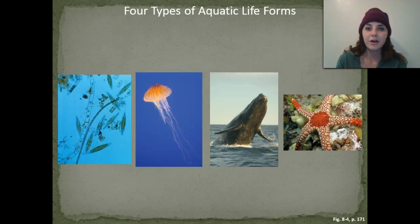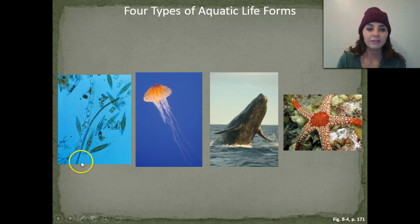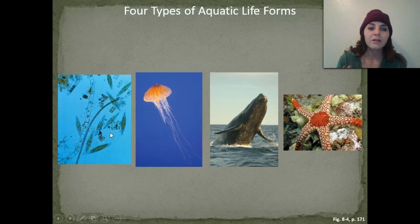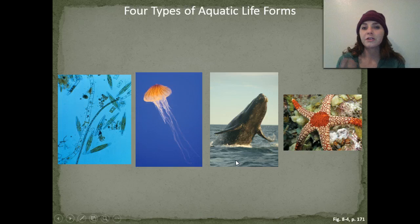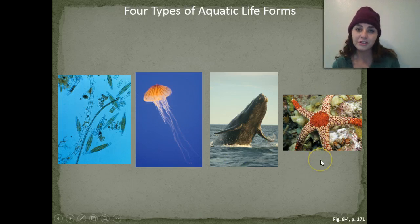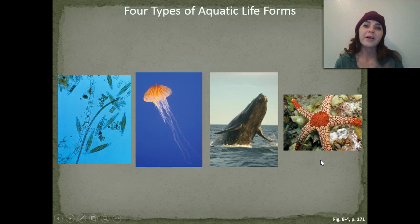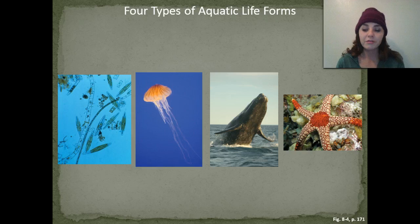There are four types of aquatic life forms we just discussed. We have plankton — different types of phytoplankton, very microscopic, a lot of them single-celled — and jellyfish. Our nekton are our strong swimmers, such as whales, fish, and sea turtles. Then we have our benthos — the little critters that crawl along the ocean floor, like starfish, brittle stars, mussels, and lobsters.